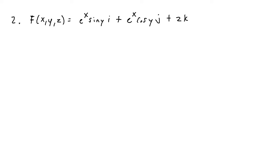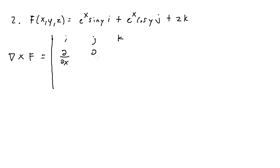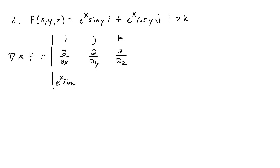For number two, let's find the curl and divergence of the vector field F = eˣsin(y)·i + eˣcos(y)·j + z·k. To calculate the curl, we take the cross product of del and F. We set up the matrix with i, j, k on the top row. Del's components are always partial with respect to x, partial with respect to y, and partial with respect to z. F's components are eˣsin(y), eˣcos(y), and z.